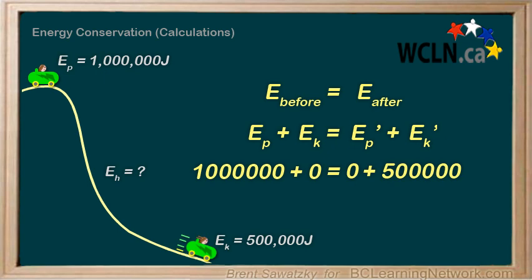And we can sum up all of this lost energy and call it E_H, for heat energy, and put it on the right side so that it will add to the kinetic energy, the 500,000 joules, and explain where all the before energy ended up.